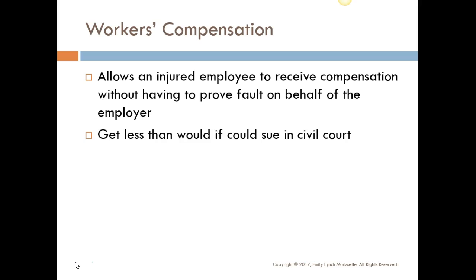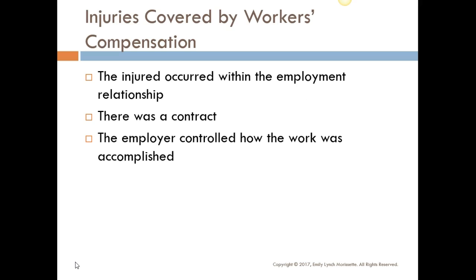You don't get as much money as you could through civil litigation and suing in court, so there are trade-offs on either end. To be covered by workers' compensation, the injury had to occur within the course and scope of employment. There must be a contract — it doesn't have to be written, it can be oral — establishing you as an employee. The employer must also control the way in which the employee does the work. For example, as an employee of Southwestern College, they control how I do my job: I must use Canvas instead of Blackboard, for instance.